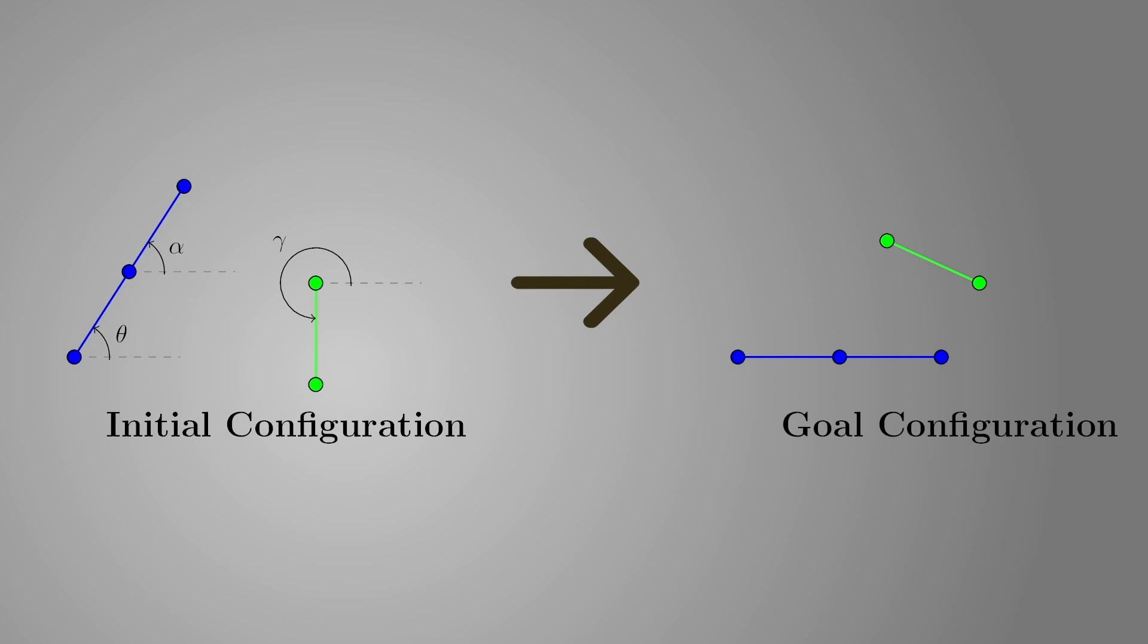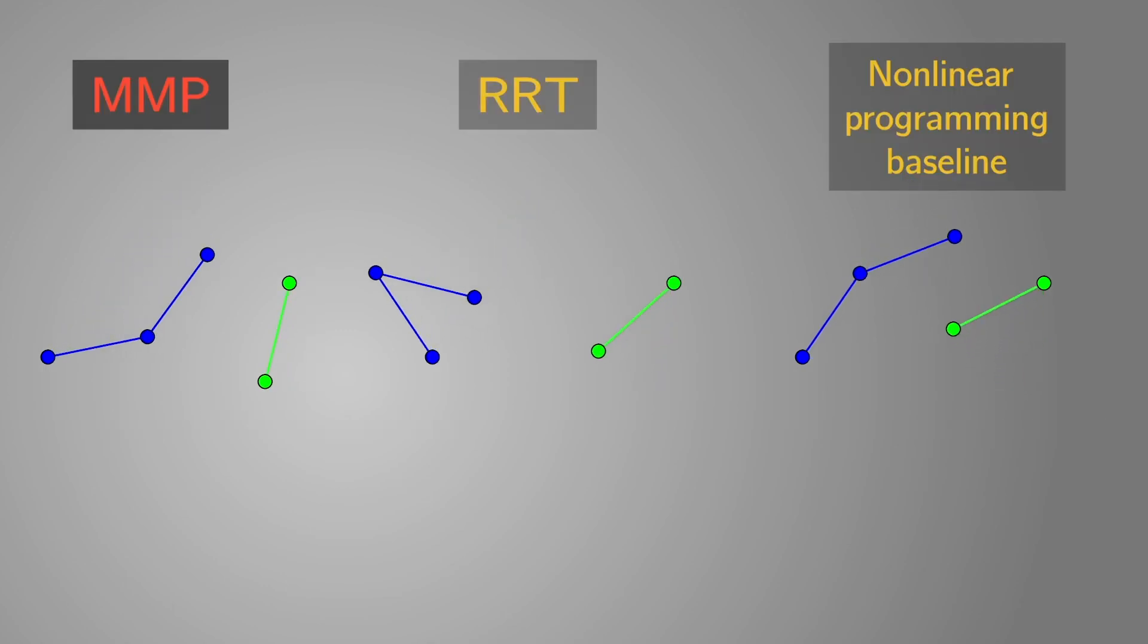In this other example, we require two arms to collaborate to go from an initial to a goal configuration without colliding. Of all competing baselines, our approach succeeds in finding the shortest and smoothest trajectory.